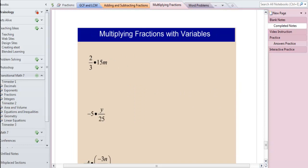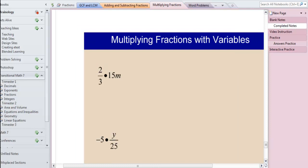On the next page we're talking about multiplying fractions with variables. We're going to apply the same steps to these problems as we would to any multiplication problems with negatives, positives, and fractions. So let's make this clearer. First of all, 2 thirds times 15 over m is the same thing as 2 thirds times 15m over 1.